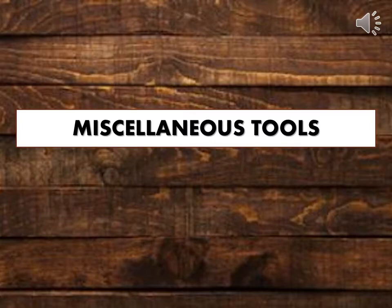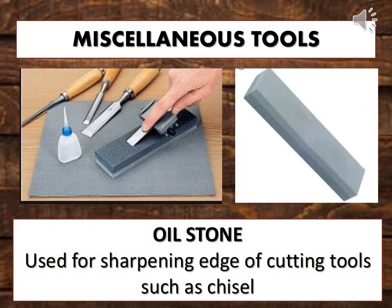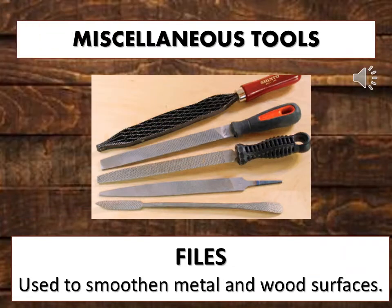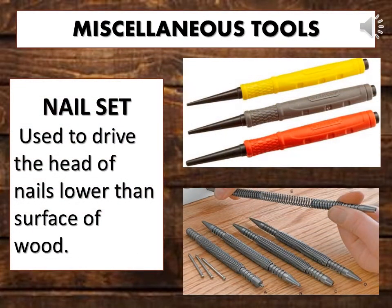Miscellaneous tools. Oil stone: used for sharpening the edges of cutting tools such as chisels. Files: used to smoothen metal and wood surfaces. Paint brush: used to apply paint or varnish on wood surfaces. Nail set: used to drive the head of nails below the surface of the wood.